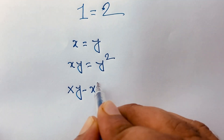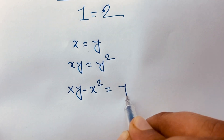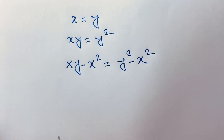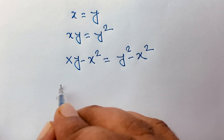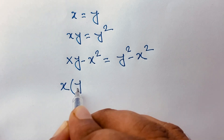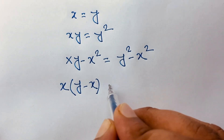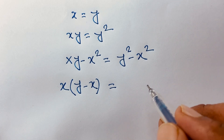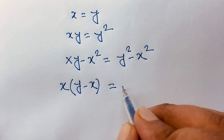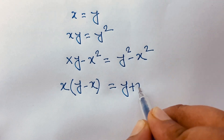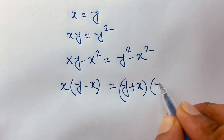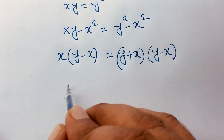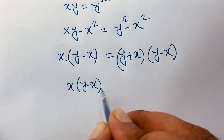So I can say x·y minus x squared is equal to y squared minus x squared. Here, x is common on the left side, so it factors to x(y minus x). On the right side, y squared minus x squared is a difference of squares, so it equals (y plus x)(y minus x).